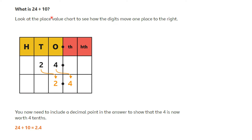What is 24 divided by 10? Here I have two tens. If I divide my two tens by 10, I will move one place on the place value chart and I will now have two units. Here I have four units. If I divide those four units by 10, they will now become four tenths — I have moved one place into the tenths column. So 24 divided by 10 is 2.4. The decimal is very important here because it's the decimal that shows us that our units have become tenths.